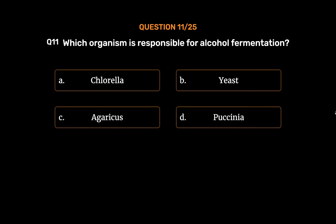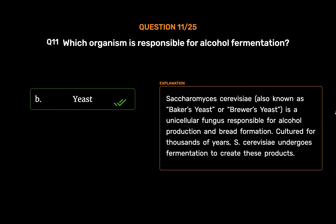The correct answer is Option B: Yeast. Saccharomyces cerevisiae, also known as baker's yeast or brewer's yeast, is a unicellular fungus responsible for alcohol production and bread formation. Cultured for thousands of years, S. cerevisiae undergoes fermentation to create these products.